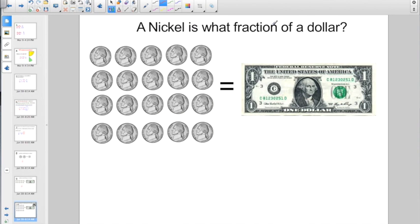A nickel is what fraction of a dollar? Well, you have 20 total nickels equaling a dollar. So 20 has to be the denominator. And I'm talking about a nickel. So how many is that? One. One twentieth. A nickel is one twentieth of a dollar.